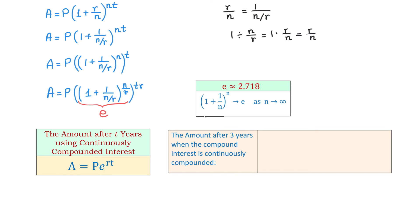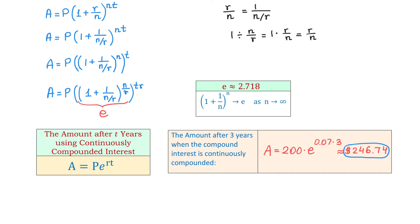Now, let's say we invest $200 at 7% for 3 years when the compound interest is continuously compounded. This means that the number of times a year the interest is calculated approaches infinity. Using the formula, we get A equals 200 multiplied by e to the 0.07 times 3, and the total amount is approximately $246.74. So, the largest amount is achieved when the interest is compounded continuously, although we should not expect this amount to be too much higher than when the interest is compounded several times a year. I hope you enjoyed this video. Please subscribe, leave a comment, and thank you for watching.